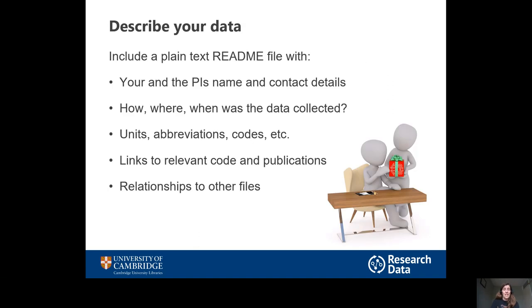Not only do you need to put your data in a repository, but in doing so you hope people will use it, so you need to give them the information they will need in order to be able to use it — and that means describing your data. You should always include a README file in plain text format that has information like contact details for the people who collected the data, the reason why the data was collected, and where, when, and how. The information in a paper's methods section is usually not quite enough for somebody who wants to reuse that data, so try to give as much detail as possible. You'll also need information about the datasets themselves, like what units you use and any abbreviations in the column headings.